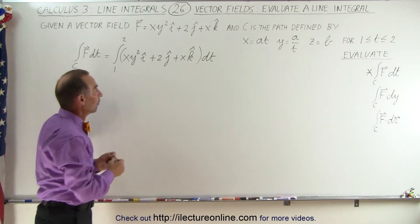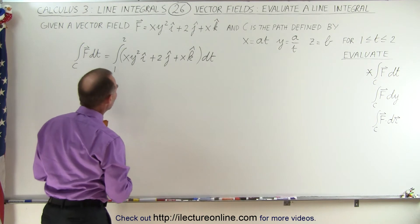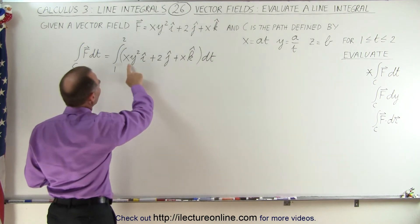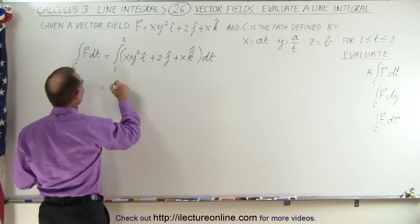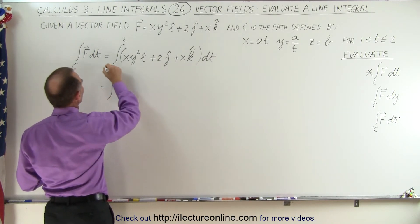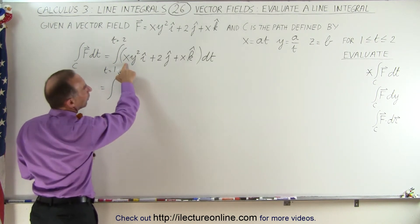So notice there's no dot product there. It's simply the differential of the variable t over which we're integrating. So now we're going to plug in the values for x and y in terms of t. So this can now be written, and of course, I should write t equals 1 to t equals 2, so we have no confusion there.